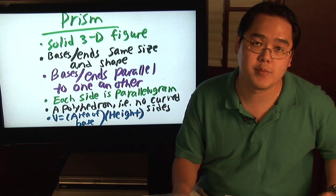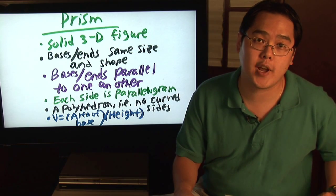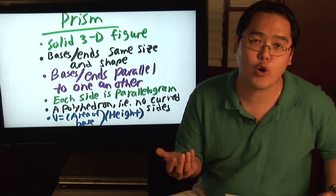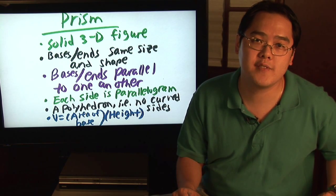If you have a triangular prism you find the area of the base which is the triangle, one half base times height of the triangle, and then you multiply by how tall the prism actually is. So I'm Jimmy Chang and there you have the definition of a prism.